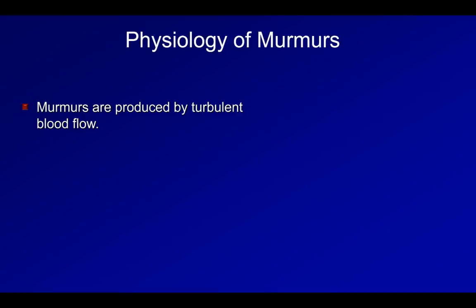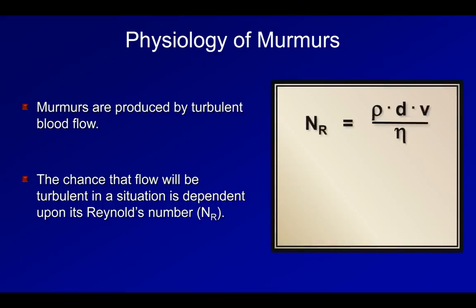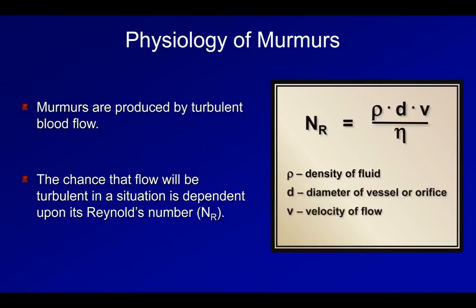The chance that blood flow will be turbulent in any given situation, and thus produce a murmur, is dependent upon its Reynolds number, with turbulence being more likely when the Reynolds number is higher. The Reynolds number can be calculated from the density of the fluid times the diameter of the vessel orifice times the velocity of flow, all divided by the viscosity of the fluid. Within the heart, the most important of these parameters are the viscosity and the velocity, and squeezing blood through a pathologically narrowed orifice will increase the velocity out of proportion to the decreased diameter.